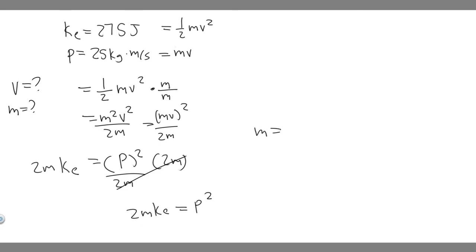So m, or the mass in this case, is going to be equal to the momentum squared over 2 times the kinetic energy. So now we can just go ahead and solve because we know the momentum is 25, 25 squared, all over 2 multiplied by 275. So go ahead and plug this in. So 25 squared, and then divide that by 2 times 275. And when you go ahead and do this, you're going to get the mass is equal to 1.136, and I'm just going to round to 1.14.